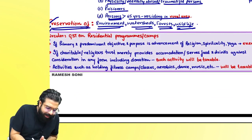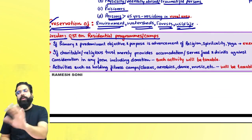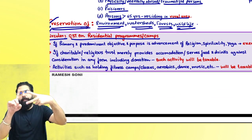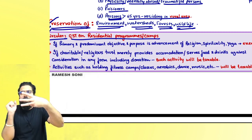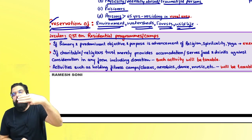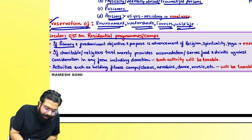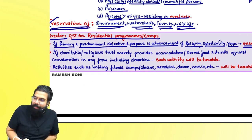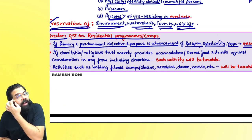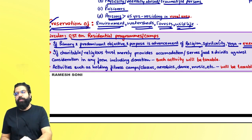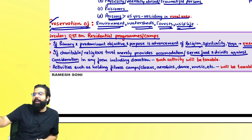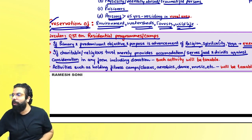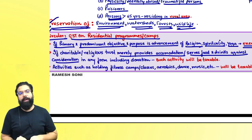Regarding residential programmes or camps: if you go to a yoga camp and they give yoga as the principal supply along with food and accommodation, food and accommodation is taxable but yoga is exempted. Because the principal supply is yoga, the entire supply becomes exempted. If the primary and predominant objective and purpose is advancement of religion, spirituality and yoga, then the entire supply shall be exempted. However, if a charitable institution is merely providing accommodation or selling food and drinks against consideration — selling food against donation is also taxable.